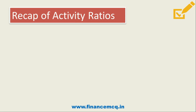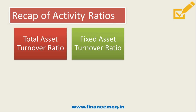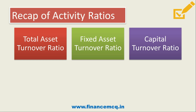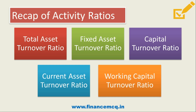To quickly recap the activity ratios covered: total assets turnover ratio, fixed assets turnover ratio, capital turnover ratio, current assets turnover ratio, and working capital turnover ratio. Try to remember the significance and relevance of each ratio, as exam questions typically ask what a ratio signifies and its uses, rather than asking you to calculate it. If possible, also remember the formulae.